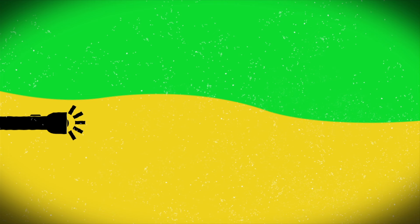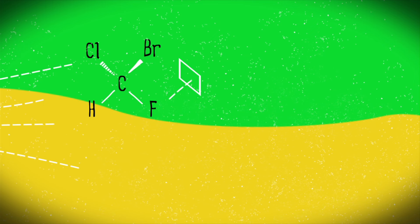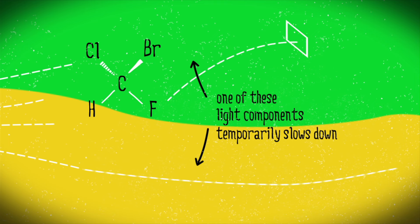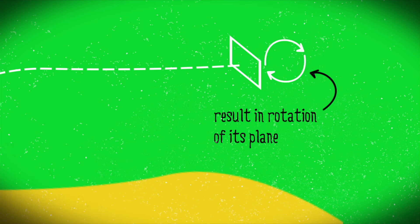Chiral molecules placed in a beam of such light interact differently with the two chiral components. As a result, one component of the light gets temporarily slowed down relative to the other. The effect on the light beam is a rotation of its plane from the original one, otherwise known as optical rotation.